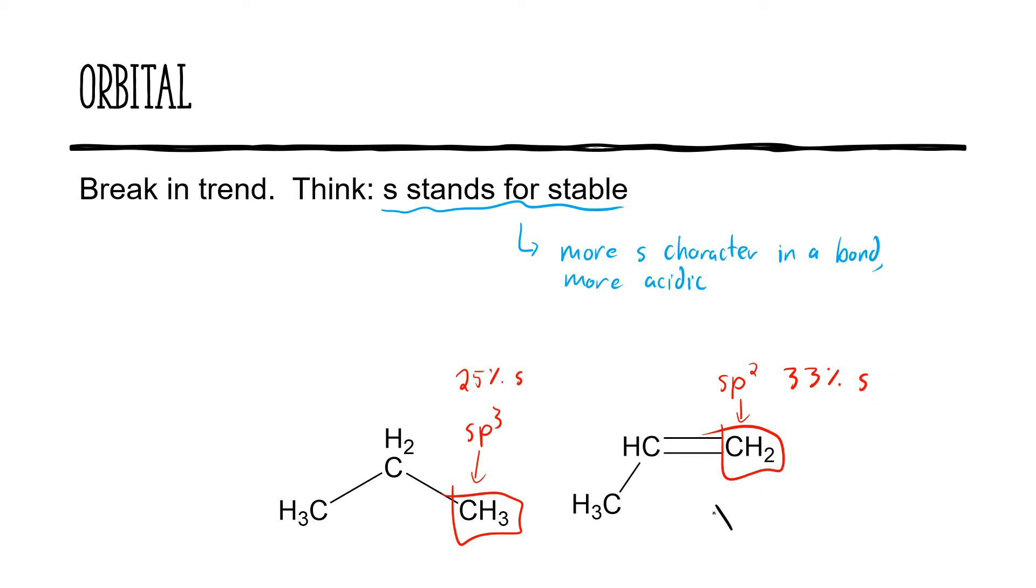As a result, we can say that this structure on the right is more acidic. Once again, it's more acidic because it has more S character. Having that more S character stabilizes the conjugate base. And a more stable conjugate base means that you have a stronger acid.